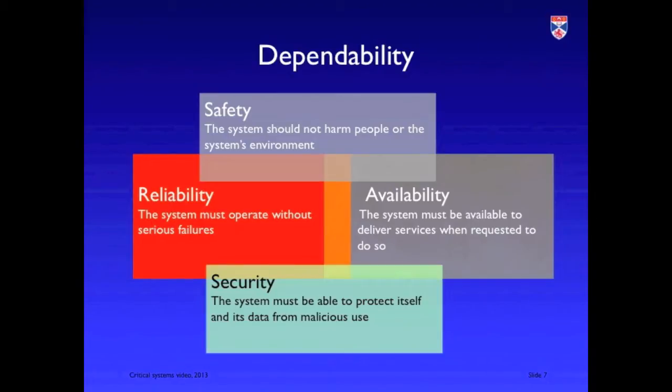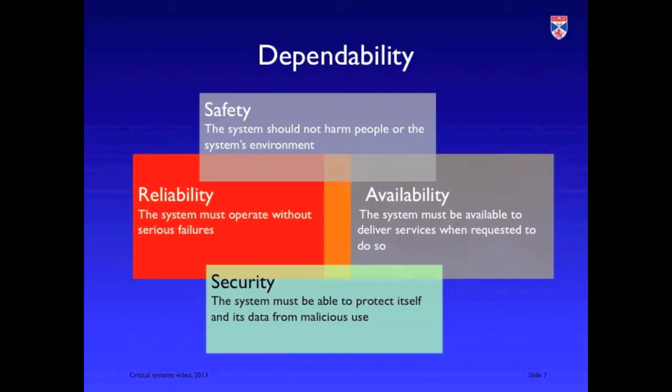We put all of these together and talk about system dependability. Dependability is not a single thing you can put a number to — it is all of these: safety, security, availability, and reliability. They're all connected to and influence each other. For example, a system may be certified as safe, but if it's insecure and damaged by a virus, that can make it unsafe. A common security attack is a denial of service attack, which affects the availability of a system. So we must look at all these critical attributes together, and we use the term dependability to describe this.